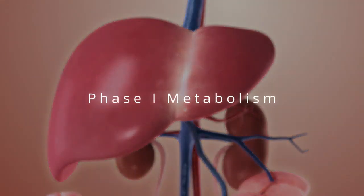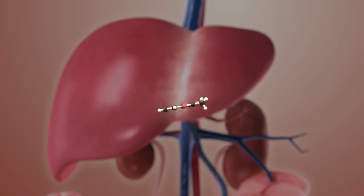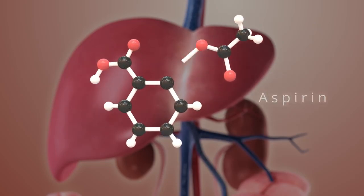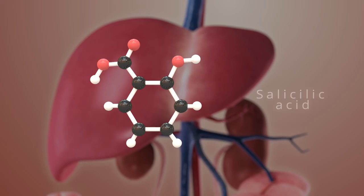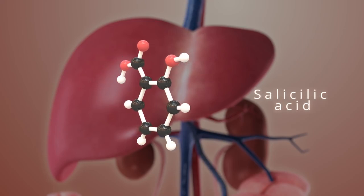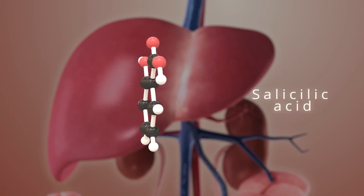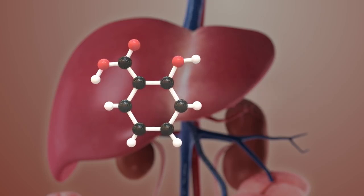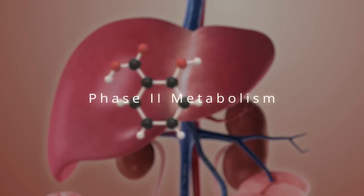Phase 1 metabolism. First, aspirin is hydrolyzed, breaking off ethanoic acid and leaving behind salicylic acid. This salicylic acid isn't water-soluble, so it can't be excreted in urine yet.